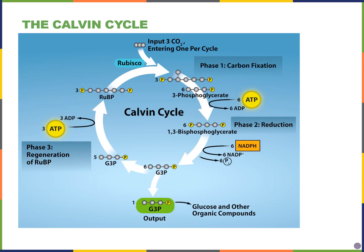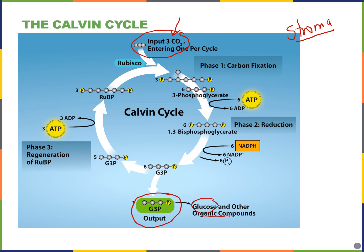You don't have to know every single step of the Calvin cycle. Know where it happens — in the stroma, the liquid portion of the chloroplasts. Know what goes in and what comes out: three carbon dioxide molecules go in to generate one glyceraldehyde-3-phosphate product, which ultimately is used to form glucose, starch, or cellulose.